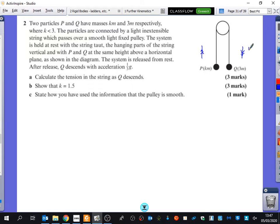So I'm going to go back to my diagram and I'm going to add in that this is 1 third G, which means that this one here must be 1 third G, because the string is inextensible, so they have the same acceleration as each other. Calculate the tension in the string as Q descends. Show that K equals 1.5, and then there's a modeling question.